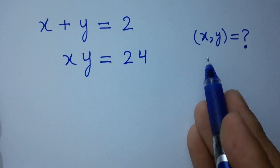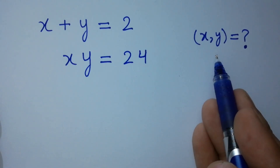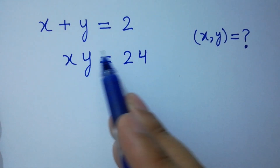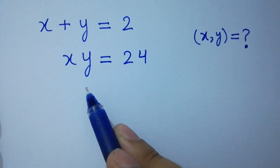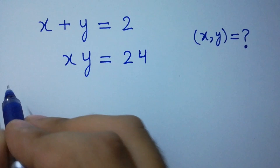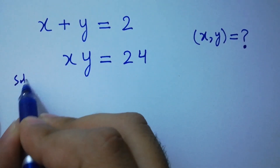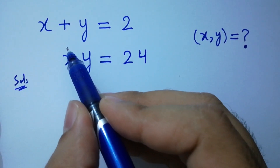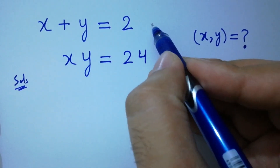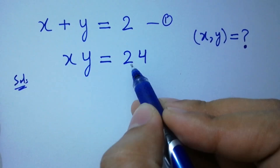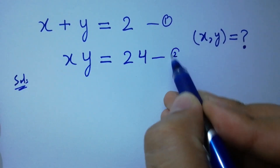Hello friends. Find the value of x and y if x plus y equals 2 and xy equals 24. Let's have a solution. Let's say x plus y equals 2 is the first equation and xy equals 24 is the second equation.